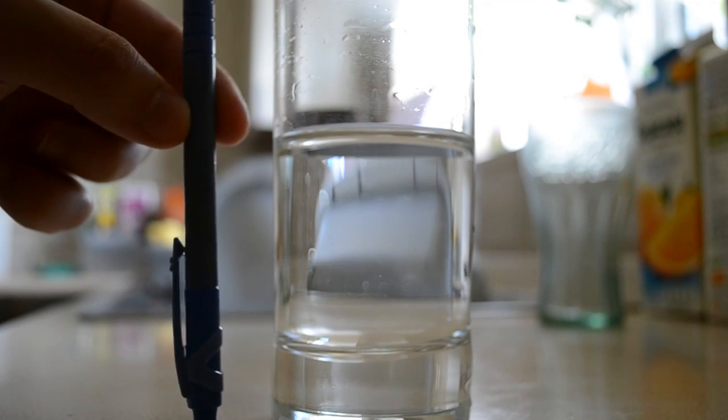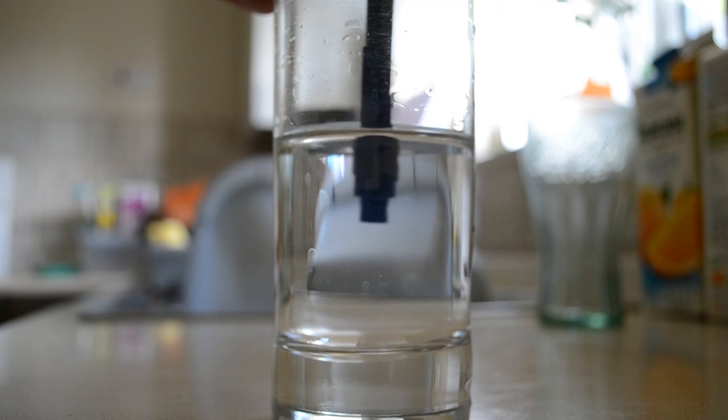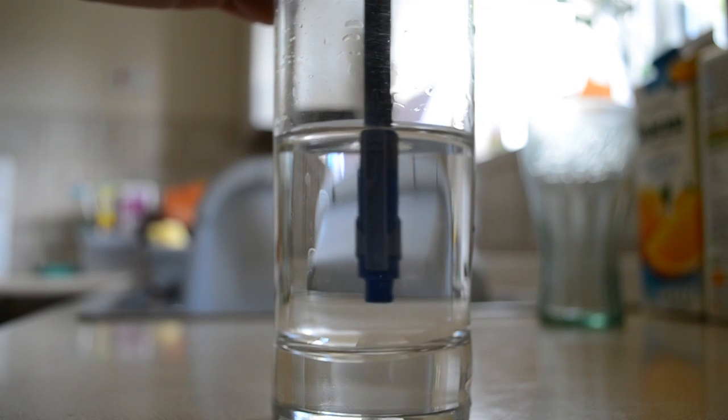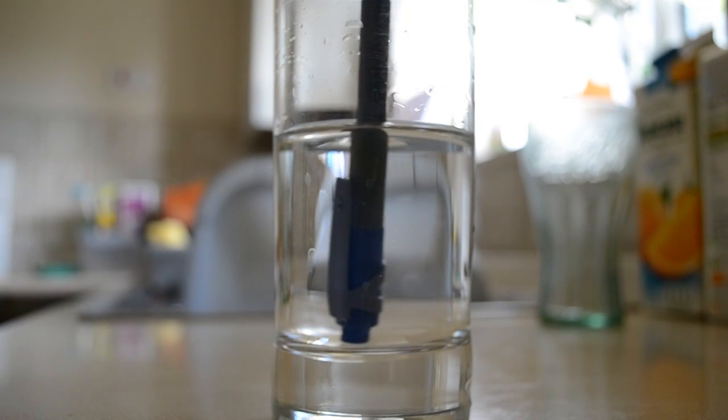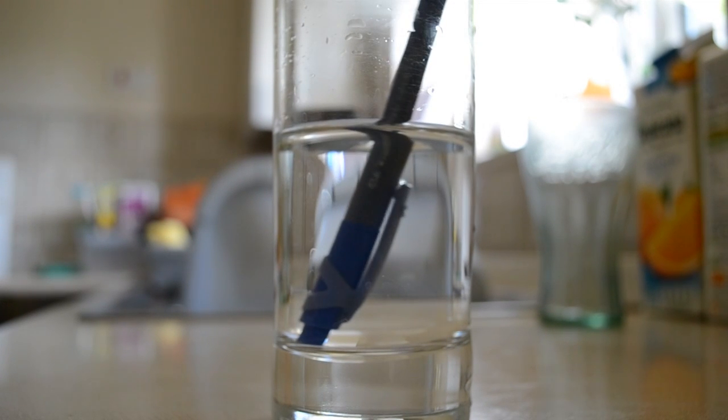One ordinary pen placed in one ordinary glass of water. We place it down straight and it's magnified. Then we tilt the pen and suddenly it looks bent. What is happening here?